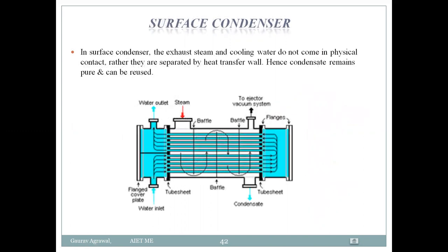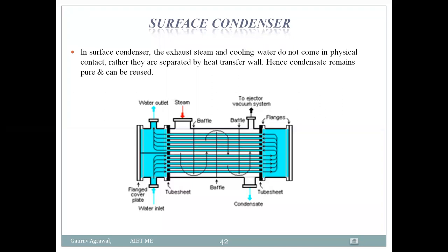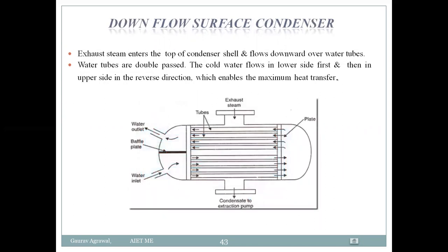Next is the surface condenser. In surface condensers, pipes separate the hot fluid and cold fluid — the condensate and cooling water do not mix. Different configurations are possible using pipes and baffle plates. The first type is the downflow surface condenser, where exhaust steam enters and flows downward. Water flows through tubes, and condensate is collected and removed by extraction pumps, with baffle plates used to separate flows.